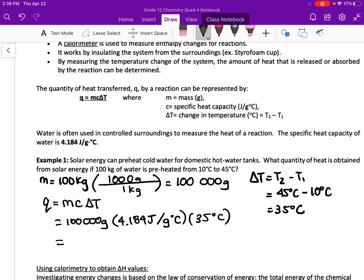When we complete this calculation we get 1.5 times 10 to the 7 joules, which we can convert to kilojoules as 1.5 times 10 to the 4 kilojoules. As we can see, all of our units have cancelled out appropriately. I'll see you next time.